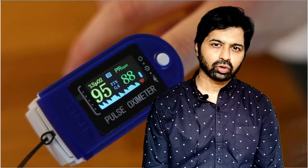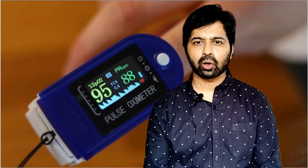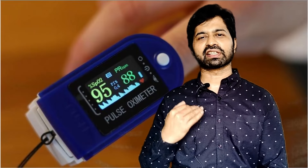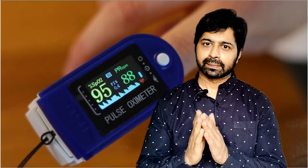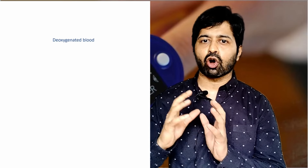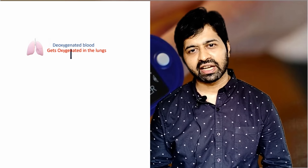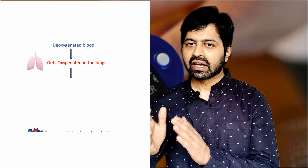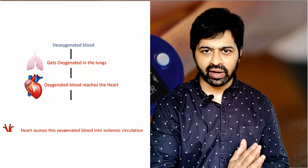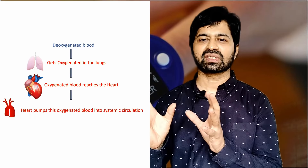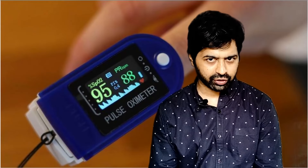Before understanding the pulse oximeter, let's briefly recall the normal physiology that happens in our body. The blood gets oxygenated in the lungs, and this oxygenated blood reaches the heart. From here, the left ventricle pumps this oxygenated blood to different parts of our body.